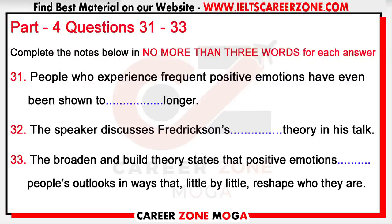A paradox surrounds positive emotions. On one hand, they are fleeting. Like any emotional state, feelings of joy, gratitude, interest, and contentment typically last only a matter of minutes. Moreover, positive emotions are less intense and less attention-grabbing than negative emotions and are more diffuse. Yet, research indicates that positive emotions contribute to important downstream life outcomes, including friendship development, marital satisfaction, higher incomes, and better physical health. People who experience frequent positive emotions have even been shown to live longer. Indeed, a recent meta-analysis of nearly 300 findings concluded that positive emotions produce success and health as much as they reflect these good outcomes.